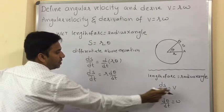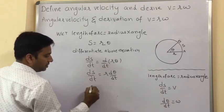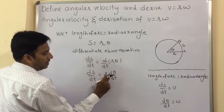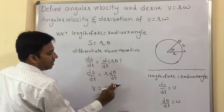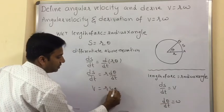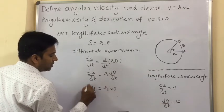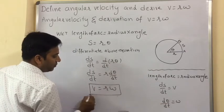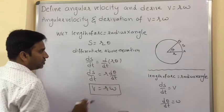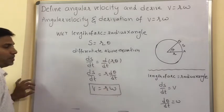Here, ds by dt is nothing but v, and r times d-theta by dt is r-omega. Therefore we have derived the formula v equals r-omega.